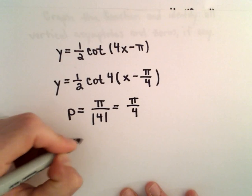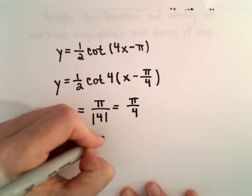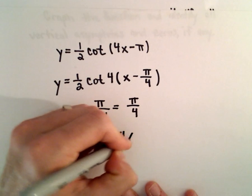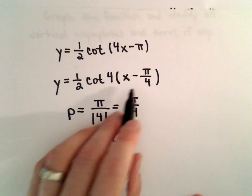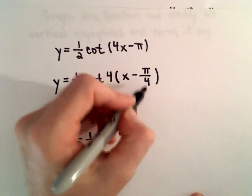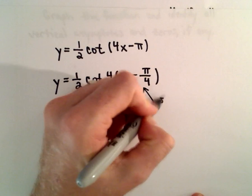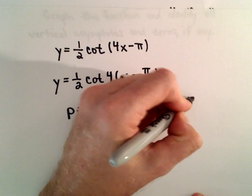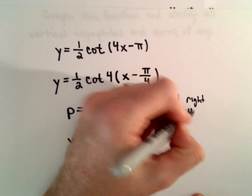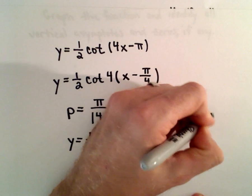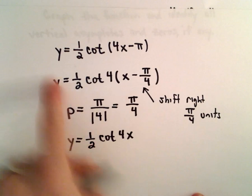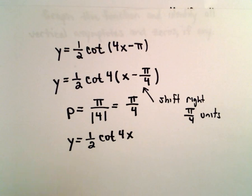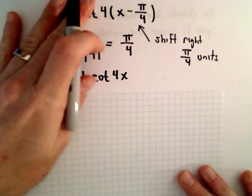So the first thing I'm going to do is actually graph y equals one-half cotangent of 4x. And then what I'm going to do is I'm going to take that graph and I'm going to shift it to the right by pi over 4 units to get the graph that we're actually interested in. So let's graph one-half cotangent of 4x.